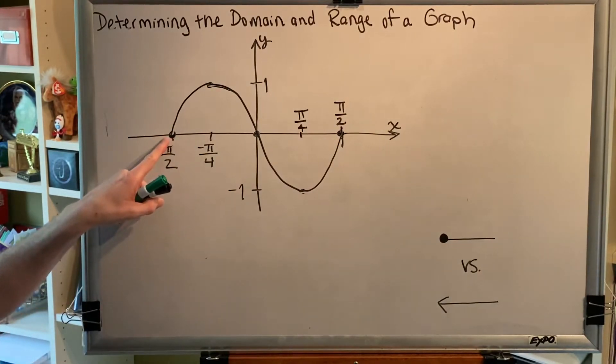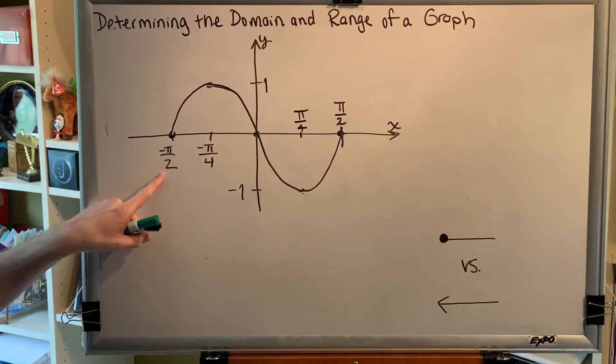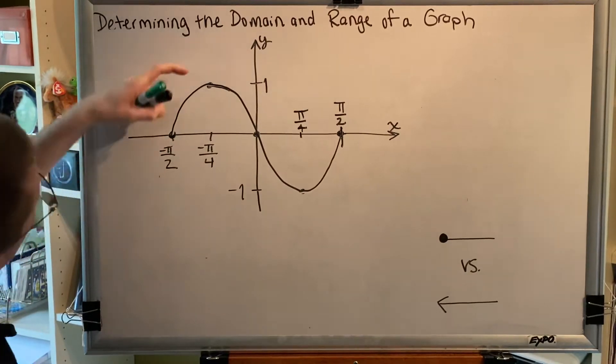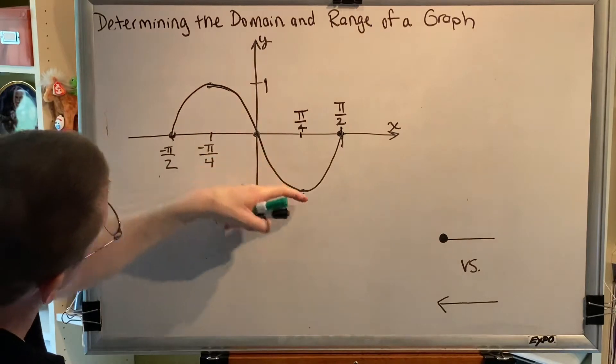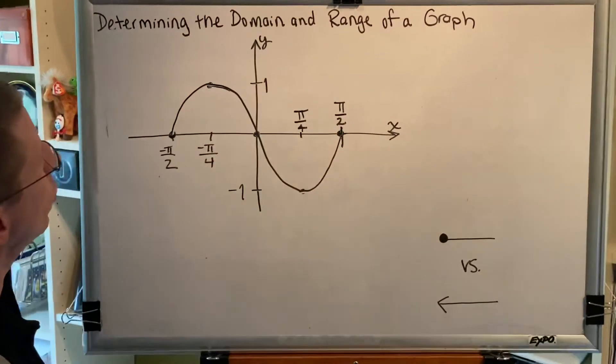It starts here at this x-intercept which has an x value of negative pi over 2. It goes up, down through the origin, down, back up again, and it stops at pi over 2.